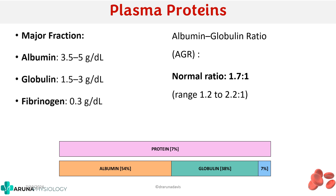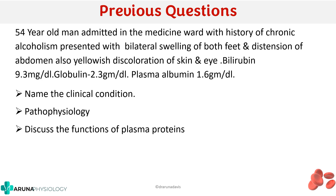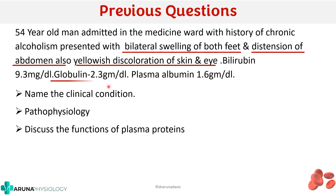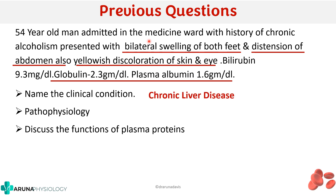Going back to the question: the patient had swelling on both feet, distension of abdomen, and yellow discoloration. His globulin is more than albumin, meaning albumin production is affected. Albumin is synthesized from the liver, so these symptoms along with decreased albumin production points to a condition affecting the liver. Combined with jaundice, all this points to a chronic liver disease, most probably cirrhosis.